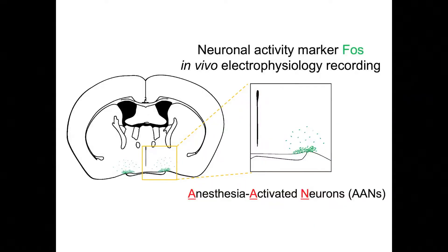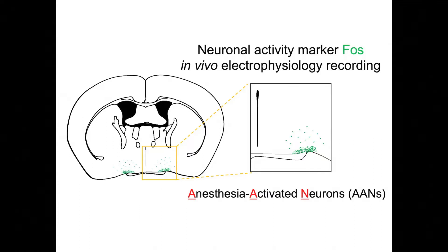This shared common feature led us to postulate the existence of a common neural substrate. We further hypothesized this common neural substrate consists of neurons that are activated by general anesthetics. Indeed, we discovered a specific group of neurons located in the very bottom of the brain that can be activated by general anesthesia, either using neuronal activity markers for staining or in vivo electrophysiology recordings.